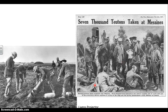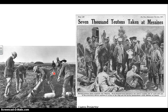Another weapon used is the Livens Projector — essentially a line of trench mortars. What they're delivering here, you can see, is a canister of gas being loaded in. This line of mortars was cabled up together so that one trigger could set off a whole line of these mortars, projecting gas into the opposition's trenches.